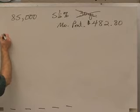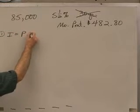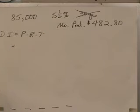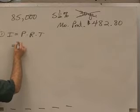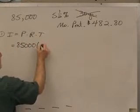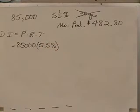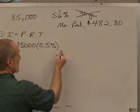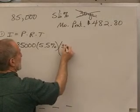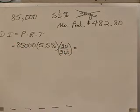So, to start our amortization schedule, we would say interest is principal times rate times time. How much are we borrowing when we first start? $85,000. What's our interest rate? 5.5%. And when you're making a monthly payment, time is always one month: 1 out of 12 or 30 out of 360. Same fraction, isn't it? And that's going to be our interest for the first month.